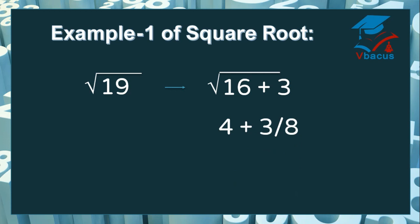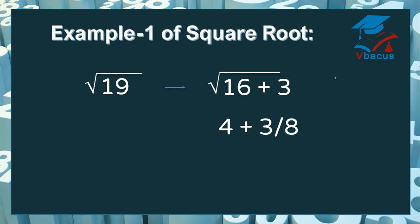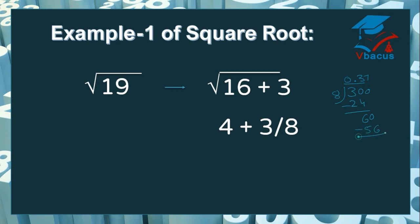We have to divide 3 by double of 4, that is 8. Let us divide 3 by 8. You cannot divide 3 by 8, so insert decimal and insert 0. 8 threes are 24. Subtract, giving remainder 6. Insert one more 0. 8 sevens are 56, remainder 4. So your answer will become approximately 4.36.